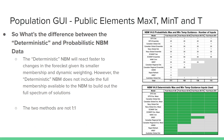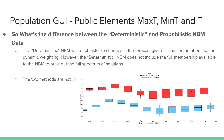The deterministic NBM will react faster to changes in the forecast given its smaller membership and dynamic weighting. However, it does not include the full membership available to the NBM to build out the full spectrum of solutions. These two methods are simply not one-to-one. On the 1D viewer, the deterministic NBM is the dot — that's what gets populated into GFE via forecast builder — and the fully probabilistic data fills out the box and whiskers.